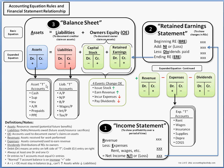Below those, we have a couple of diagrams that help us remember the various accounts that fall under each element of the accounting equation. For example, the asset T-accounts are listed here — accounts like cash, supplies, and inventory. We've also got liability T-accounts, such as accounts payable, notes payable, and bonds payable.